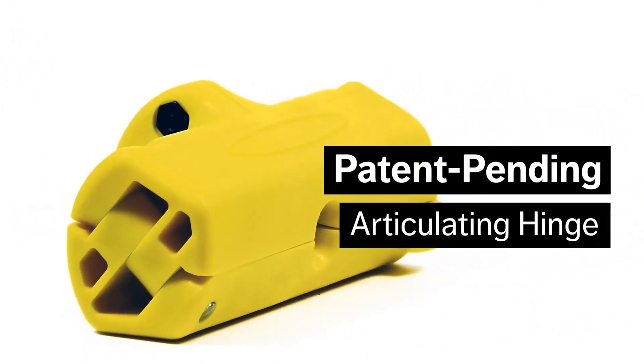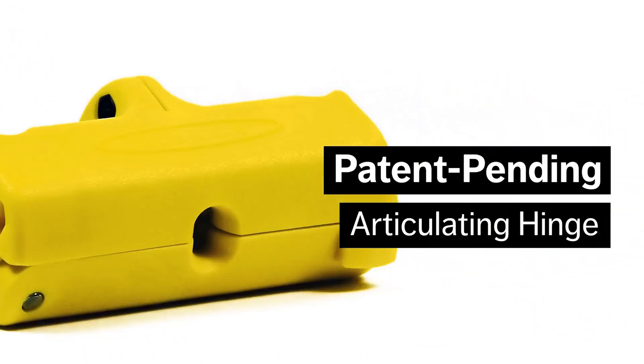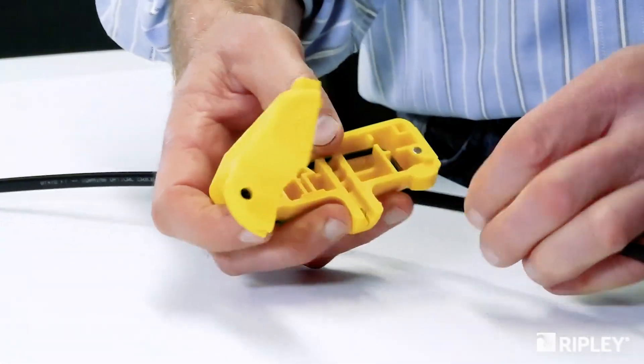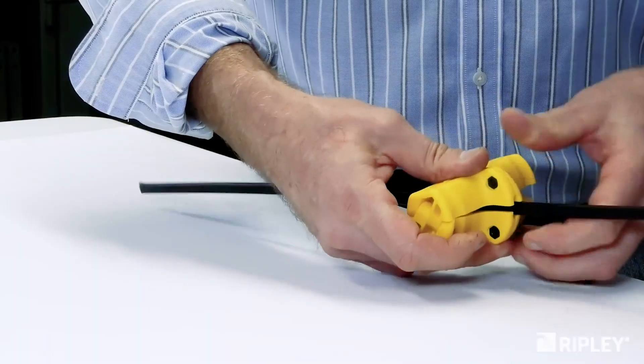The patent-pending articulating hinge accepts cable for end and mid-span applications without disassembling the tool. The tool easily closes and tightly clamps around the cable without the need for a latch.